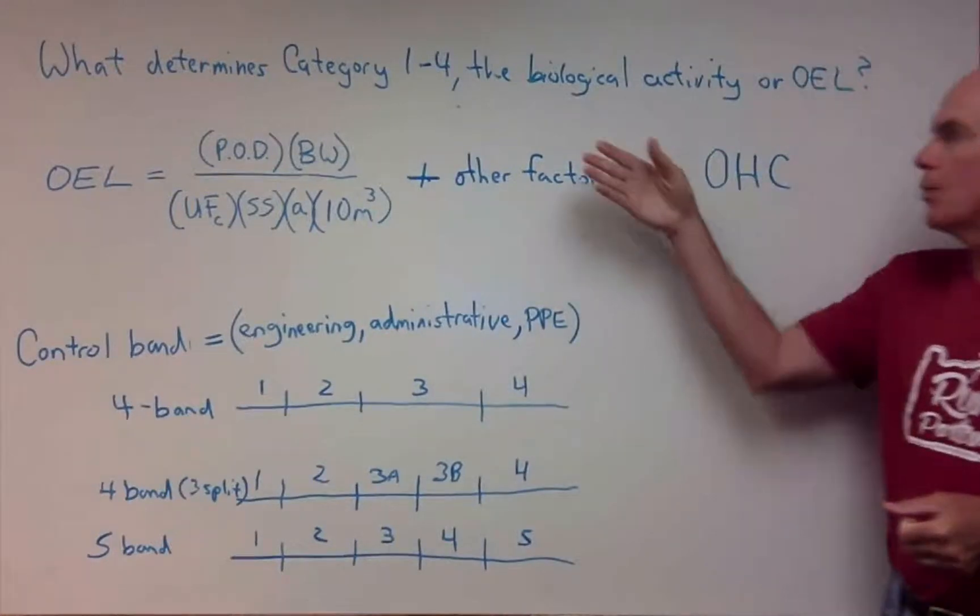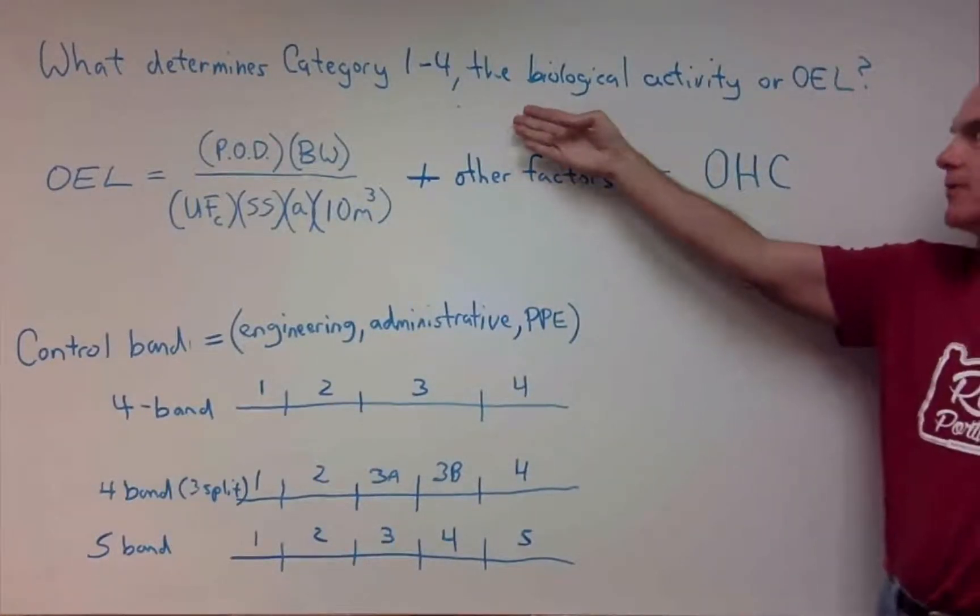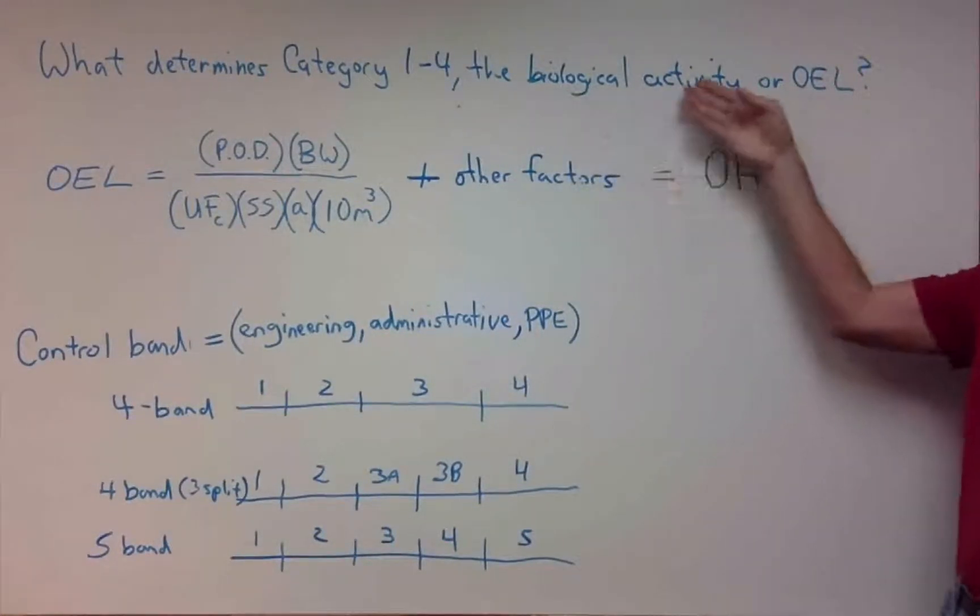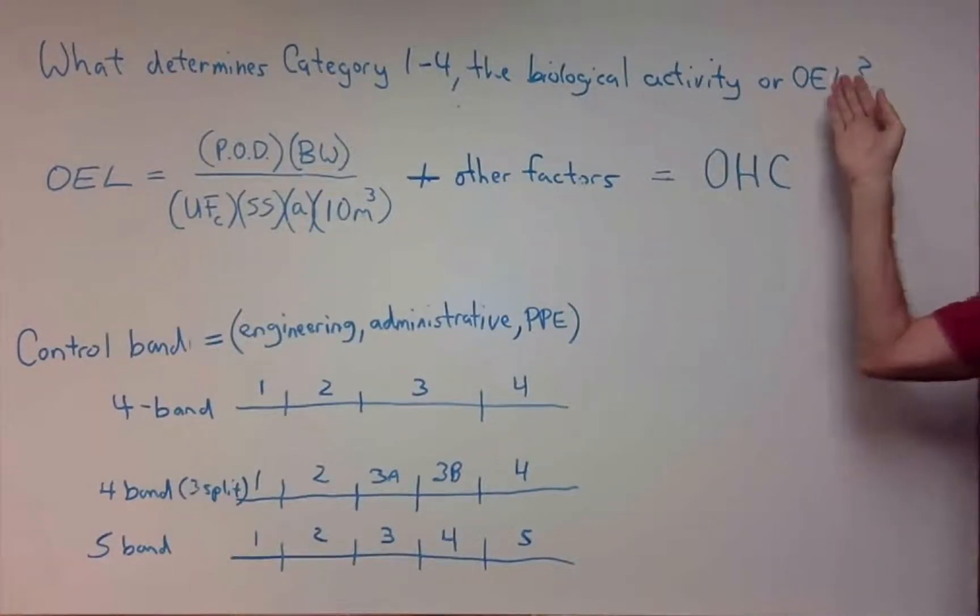So back to our original question, what determines the category 1 through 4, the biological activity or the occupational exposure limit?